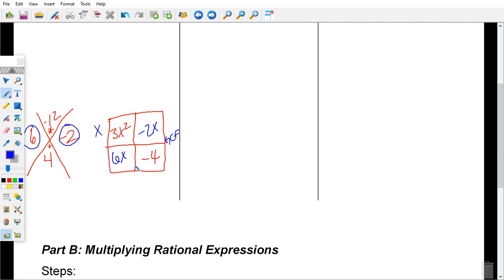One X. What's the GCF of the second row? Two. What's the GCF of the first column? What's the GCF of the last column? Negative two. So my factors for my denominator are going to be X plus two and three X minus two. Do we see that?